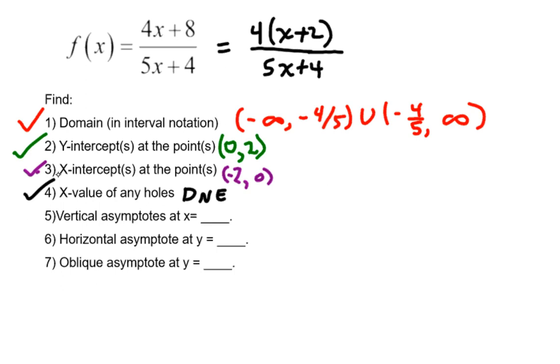The vertical asymptotes of the function are going to be at the places where we excluded the x values. So the answer would be x equals negative 4 fifths. That is the equation of the vertical asymptote where the function, the rational function, will never touch or cross. Vertical lines always have x equals a constant as the equation.